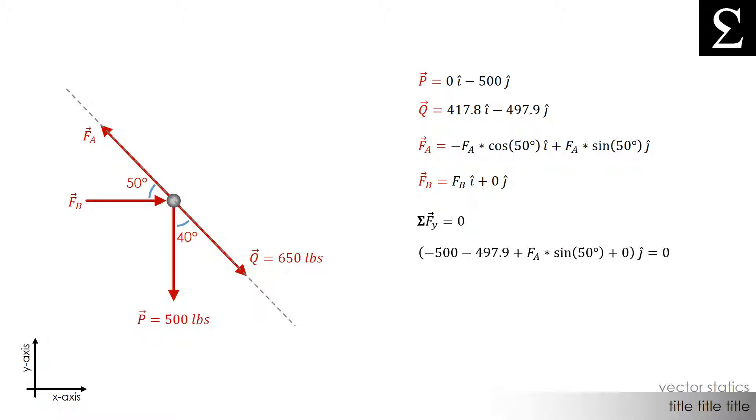We have negative 500 pounds from force P, negative 497.9 pounds from force Q, FA sine of 50 from force FA and 0 from force FB. Remember we sum all the j components since these are the ones in the y direction.